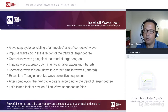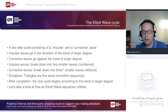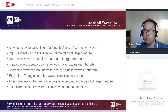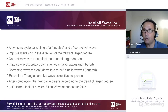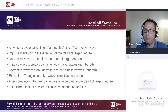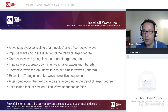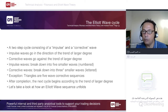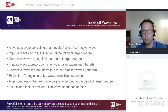There is an exception: triangles break down into five-wave patterns (A, B, C, D, E), but each leg within the triangle is itself a three-wave sequence. Triangles are typically corrective patterns. Once the Elliott cycle completes, the next impulsive move within the trend of the next higher degree follows.